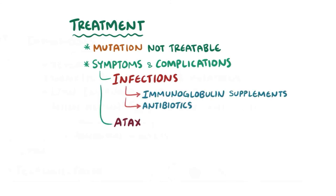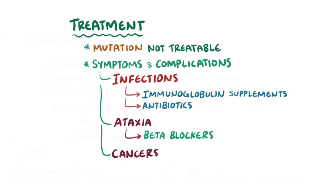For ataxia, in some cases beta-blockers can be used as well. And finally, for cancer development, individuals usually have increased surveillance.